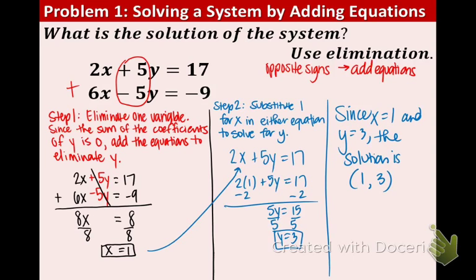Remember, the solution is the point of intersection where these two lines meet. The checking process is just plugging in 1 and 3 for both equations. I won't show you this here, but make sure you understand what the checking process is.